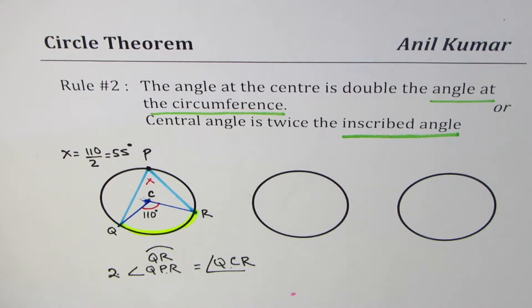Circle theorem is all about finding angles when lines and circles are involved.